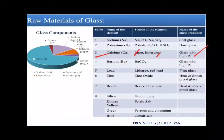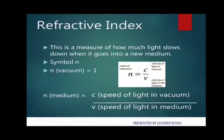Now we will discuss what the refractive index is. The refractive index is the measurement of how much light slows down when it passes into a new medium — that is, when light travels from one medium to another.